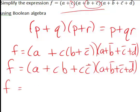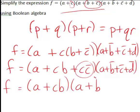And c c bar, c and c bar, that is equal to zero. Hence we are left with a plus c b plus zero, which just becomes a plus c b. And that is still multiplied by a plus b bar plus c bar plus d bar.